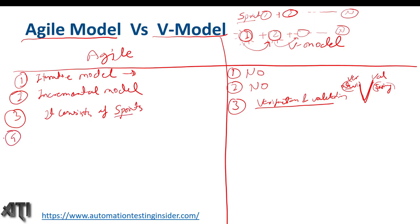Regarding phases: Agile has five phases in each sprint — requirement analysis, design, coding, testing, and release plus maintenance. In the V-model we have five phases in verification: requirement analysis, high-level design, low-level design, coding, and release. On the testing side we have unit testing, functional testing, integration, system, and acceptance — five phases in validation as well.